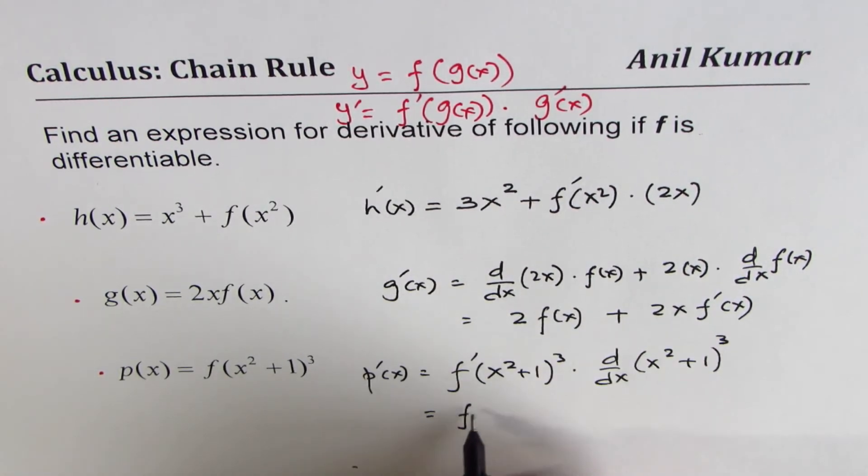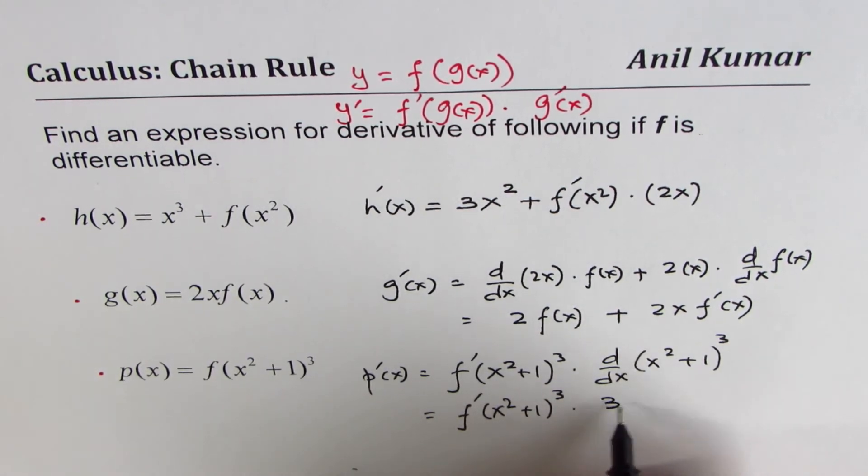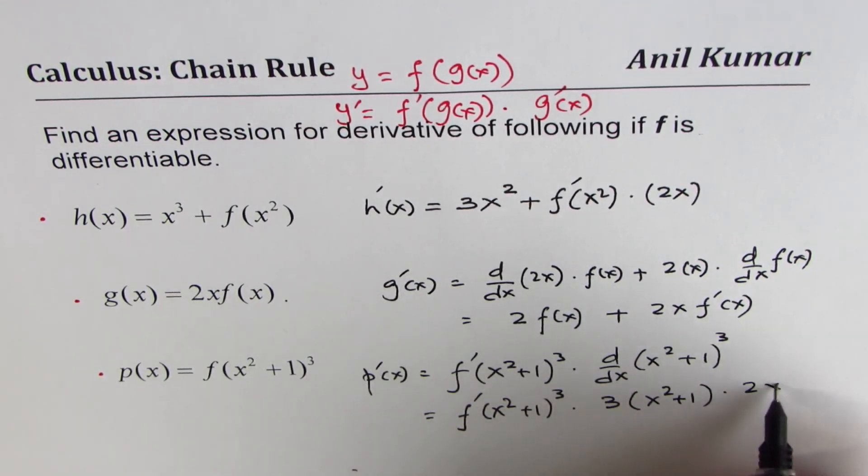So that should equal the derivative of x squared plus 1 whole cube times 3 times x squared plus 1 times the derivative of the inside function, which is 2x.